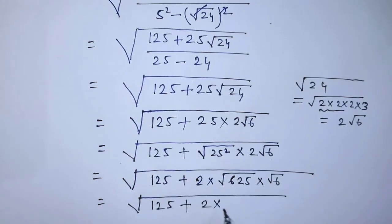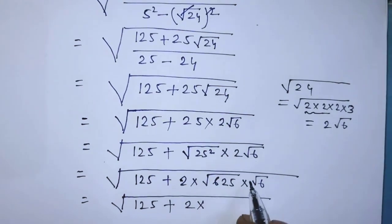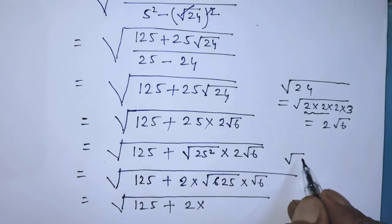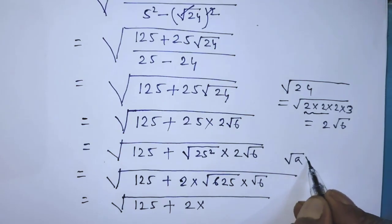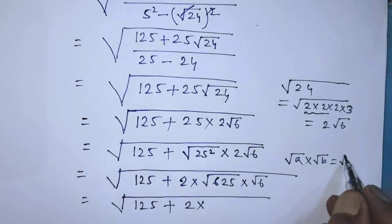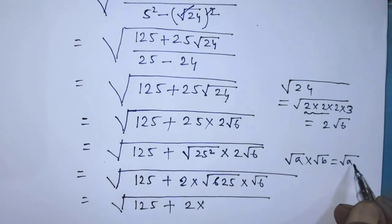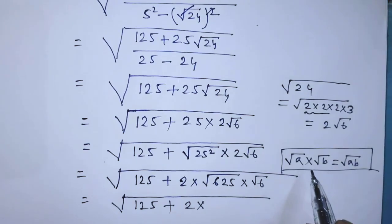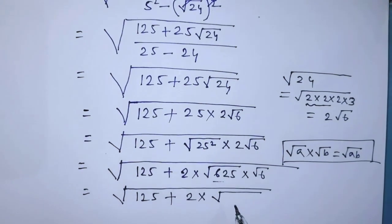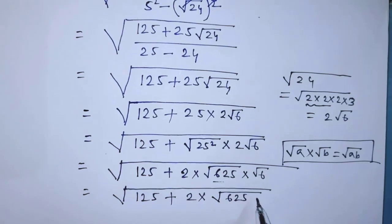To simplify this algebraic expression further, we apply the formula: square root of a times square root of b equals square root of a times b. According to this formula, we can write square root of 625 times 6.